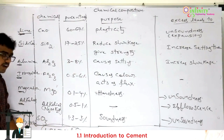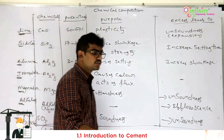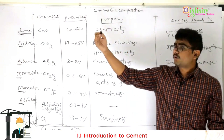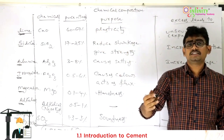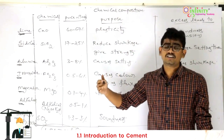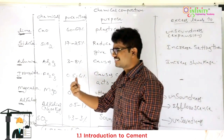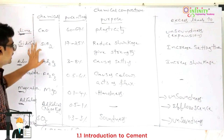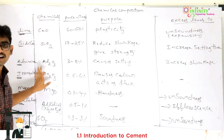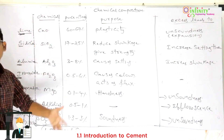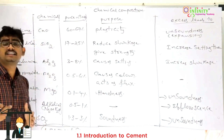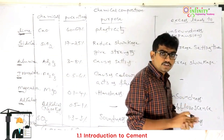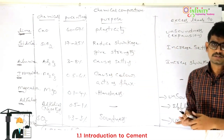In 2019, one MPSC question asked for the descending order of percentage of chemicals in cement. The answer is: lime, silica, alumina, and iron oxide — in that descending order of percentage. This completes the topic of chemical composition of cement.